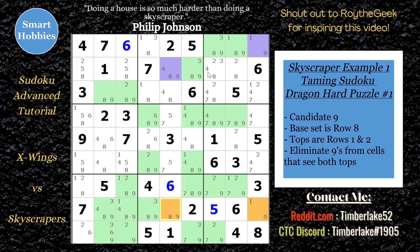It still has the idea of a base set — in this case, row 8 where the two candidates match — and then cover sets where you do the eliminations. Realize, though, that the two tops of the skyscraper are not in the same row and not in the same column.